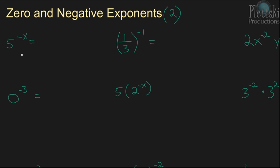In the last lesson, we learned what zero and negative exponents were, and the rules. A zero exponent just makes whatever it is equal to 1. So, for example, 3 to the zero power is going to equal 1. And a negative exponent means that you're going to rewrite it as a reciprocal, and then you'll change the sign of the exponent. So, 2 to the negative 2 power is the same thing as 1 over 2 squared.